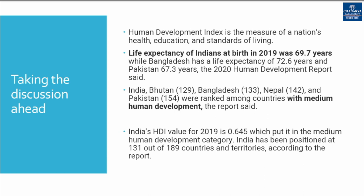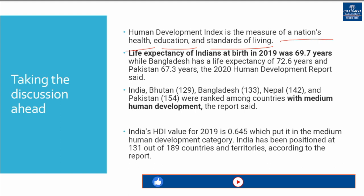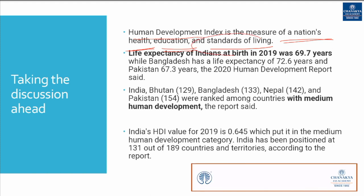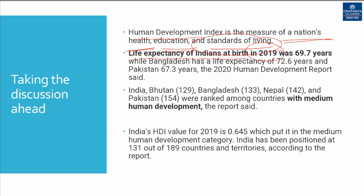The Human Development Index is the measure of a nation's health, education, and standards of living. According to the report, life expectancy of Indians at birth in 2019 was 69.7 years, nearly 70 years. Life expectancy of Indians is 69.7 years while Bangladesh has a life expectancy of 72.6 years.